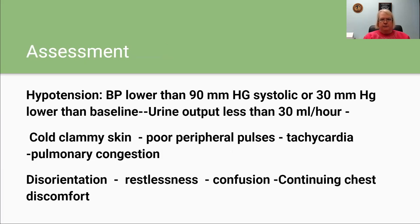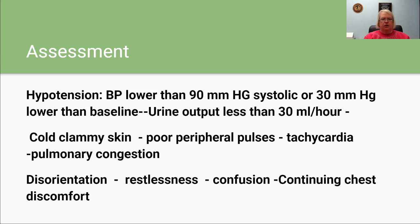So the assessment that we need to do: hypotension — the BP needs to be lower than 90 millimeters of mercury systolic, or 30 millimeters lower than their baseline. Urine output will be less than 30 mils an hour. They're going to have cold, clammy skin, poor peripheral pulses, tachycardia, and pulmonary congestion. They're going to be disoriented, restless, confused, and have continuing complaints of chest discomfort.